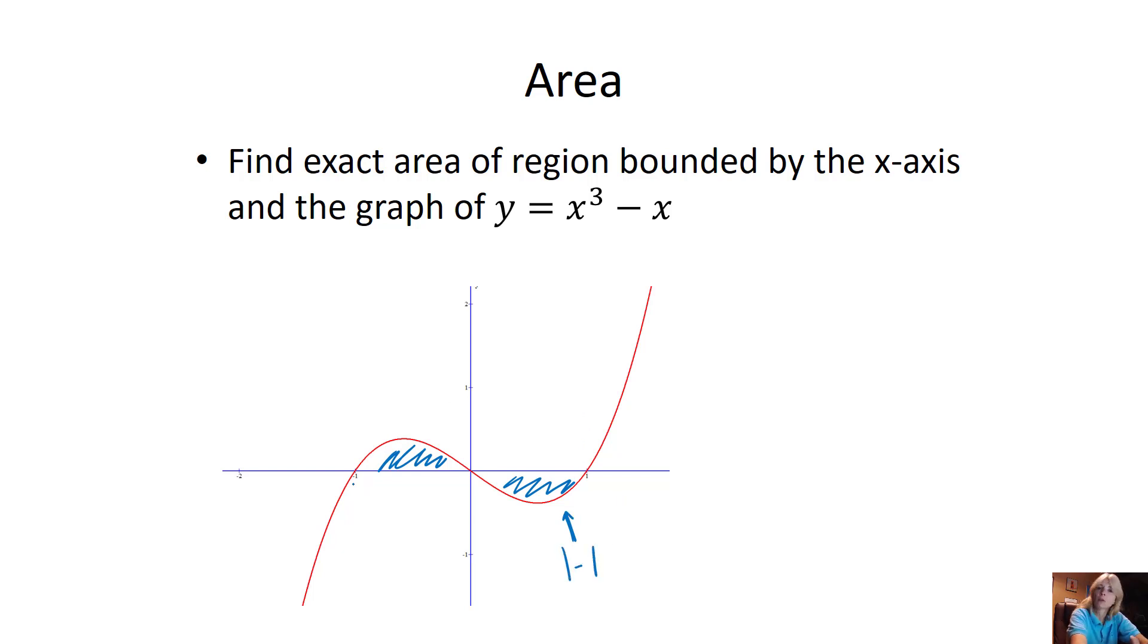But it also gives me my interval. So from negative 1 to 0 will be this area. Let's just do it on this side: negative 1 to 0 of x cubed minus x dx, and then this side will be 0 to 1, x cubed minus x dx. And we have to remember to absolute value that. Now, nicely, these two areas are going to be equal, but let's just work it out to make sure.